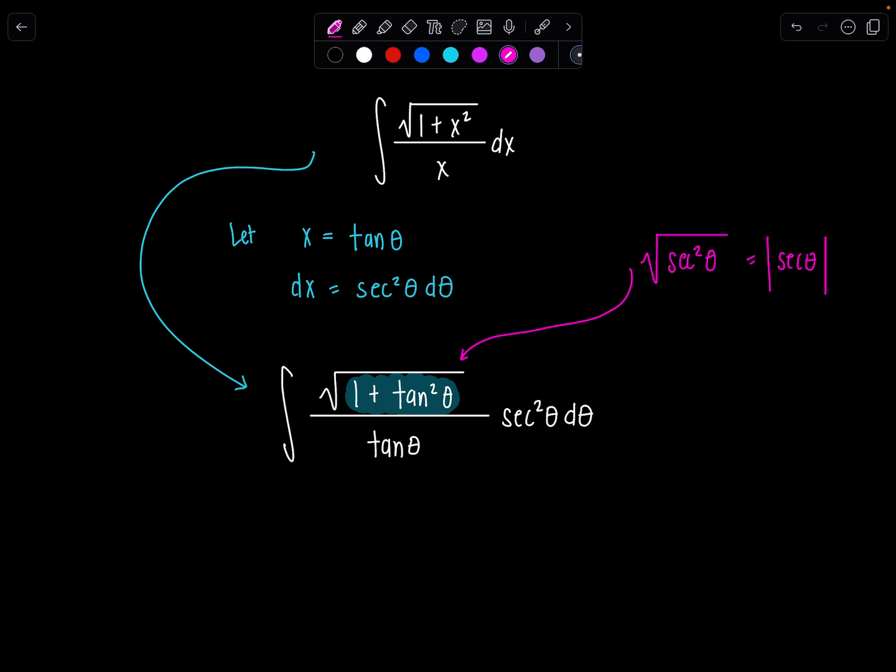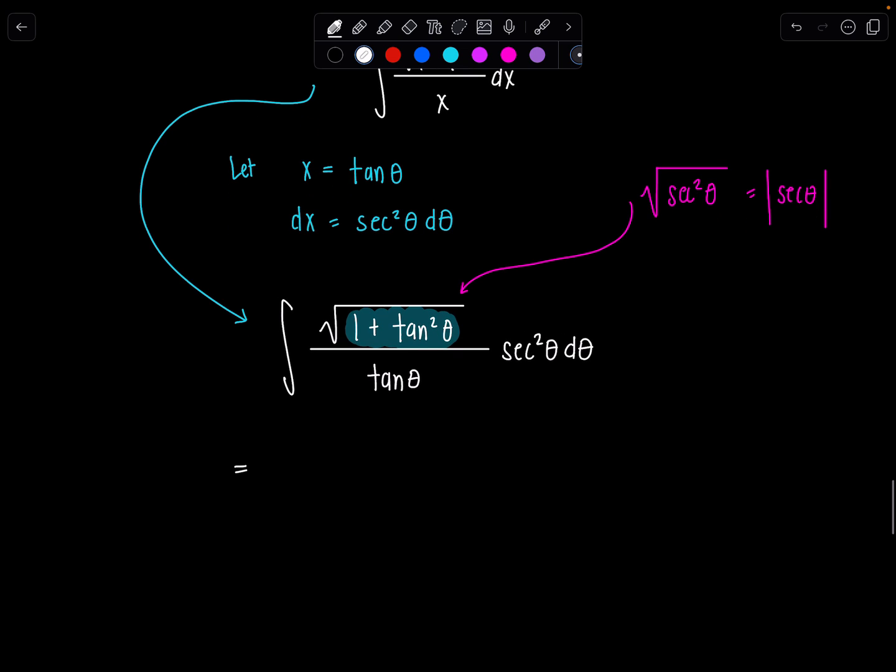But when we set up trig sub, we restrict theta so that we don't have to worry about whether or not secant is going to be negative. We can just assume it's positive based on our angle restriction. So I'm not going to write all of that, but just so you know, that's going on behind the scenes. Don't think we're being sloppy all of a sudden. So in the numerator, I'm just going to put secant theta. And then we still have this over tan theta. And then here's secant squared theta d theta.